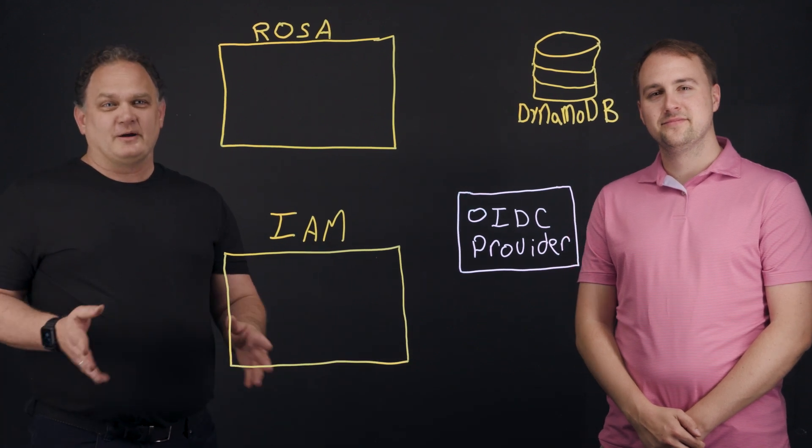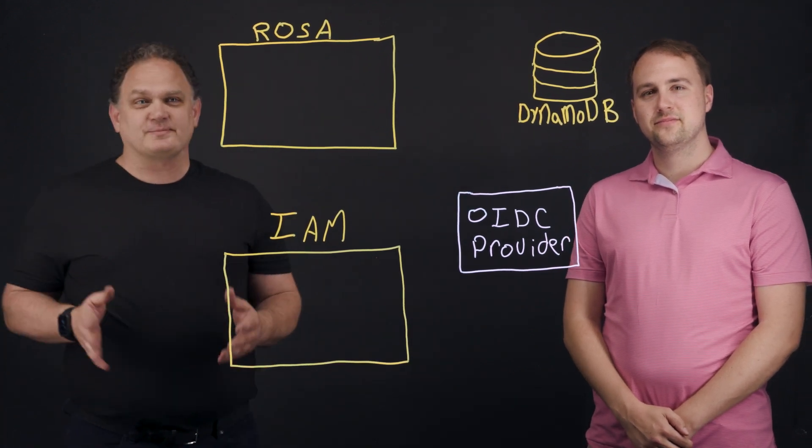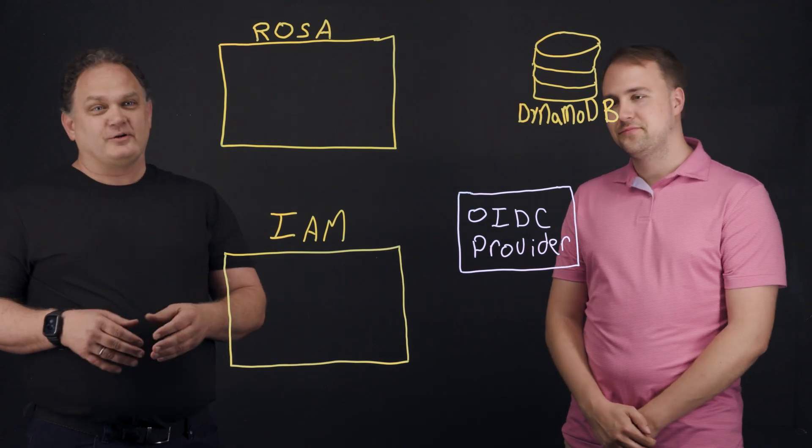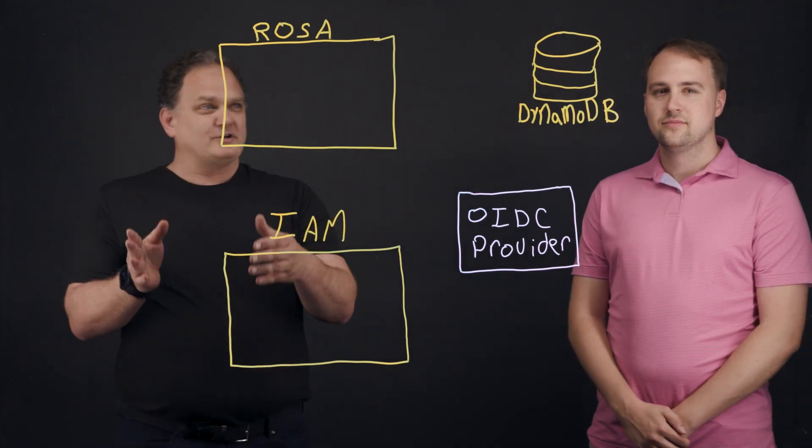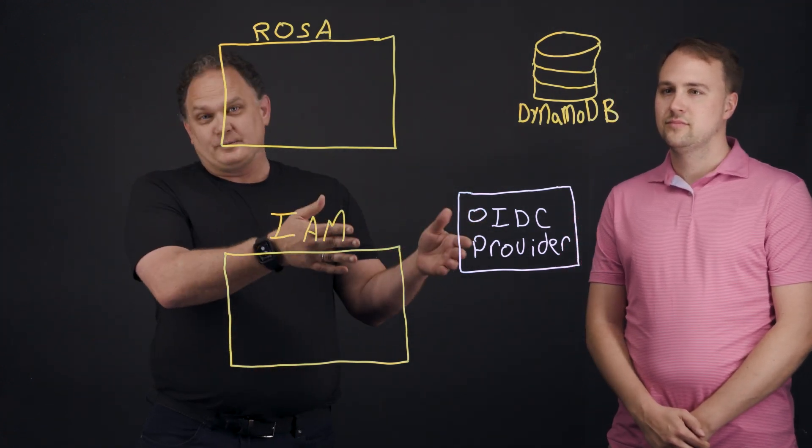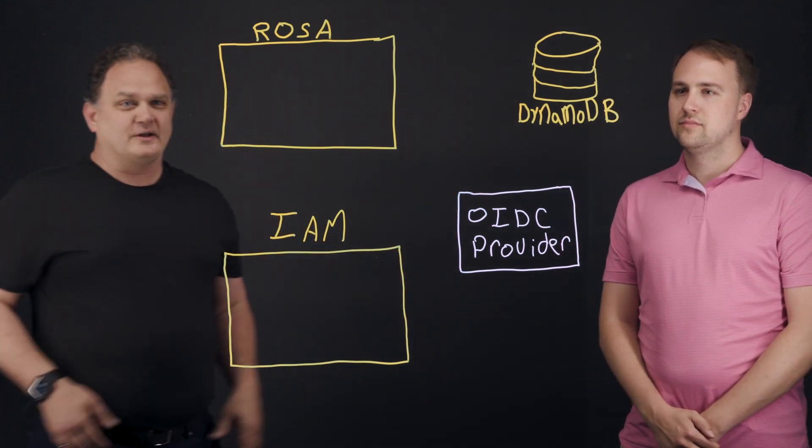So today we're going to talk about IAM roles for service accounts. It's also known as pod identity. This will show you how you can create a secure connection from your ROSA cluster to a database like DynamoDB, RDS, Aurora, or anything like that.